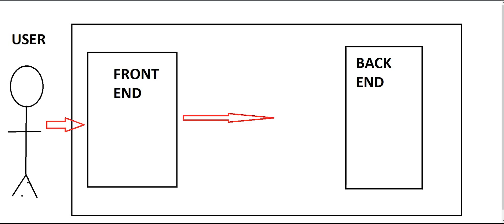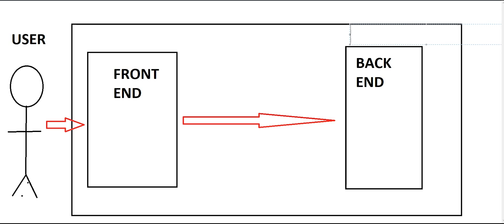The back-end is obviously where your data is stored. For example, in games you have many parameters like your score, in-game currency, and so on — all of those are stored in your back-end. What you see, the game itself, is your front-end. Basically, the back-end refers to your database — SQL or database management systems are all back-end.